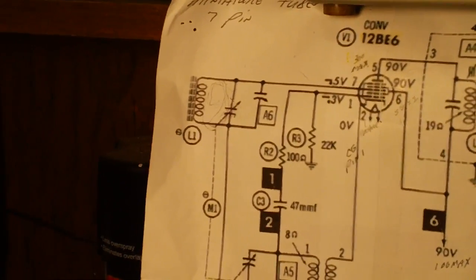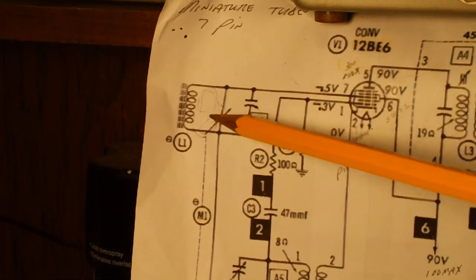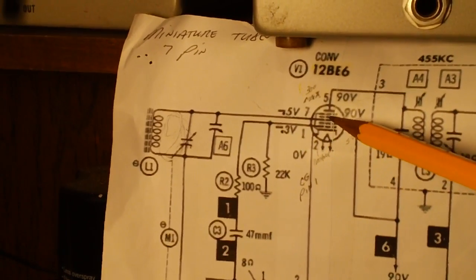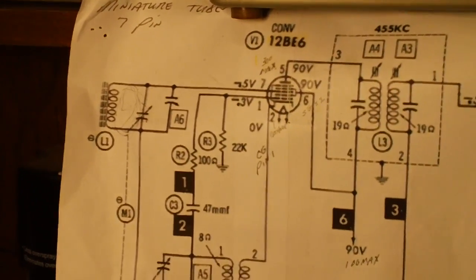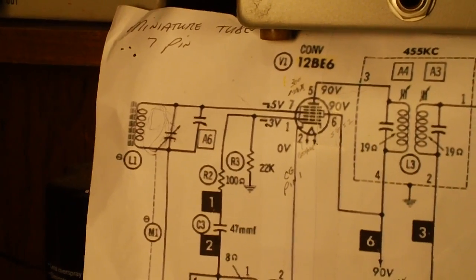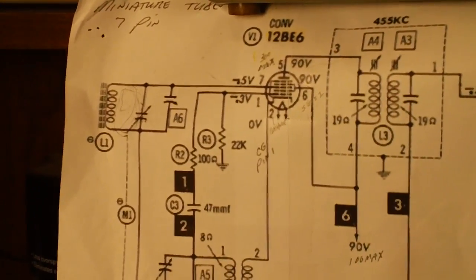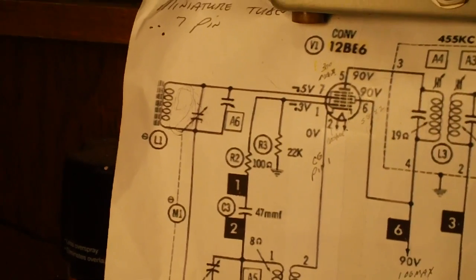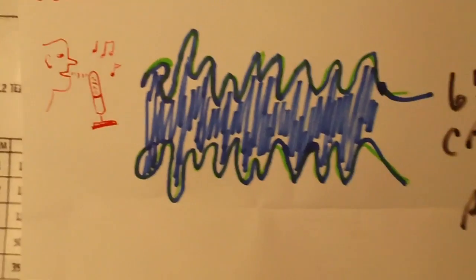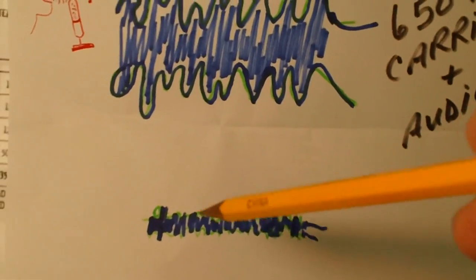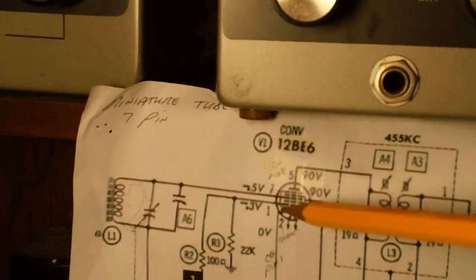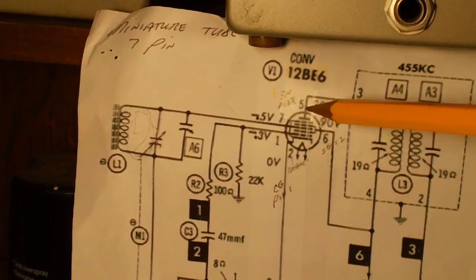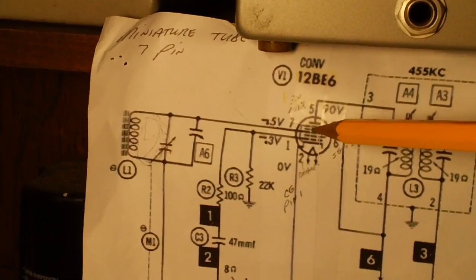When we find 650, it's going to pass that 650 kilocycles on through to grid number three of the 12BE6, which is a converter — also called a mixer, or frequency changer. Not only is it a frequency changer, it's also an amplifier. It has to take this tiny incoming signal and make it bigger. This tube will mix frequencies or change the frequency and increase the amplitude.